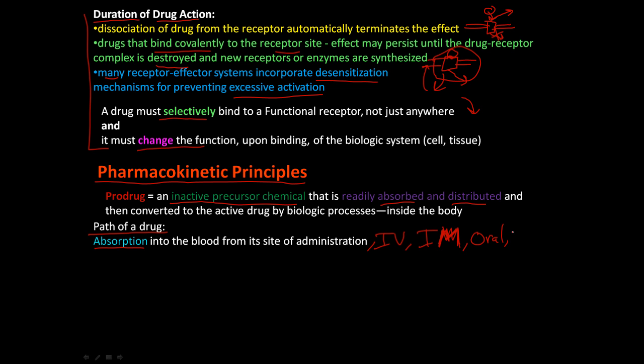It could be oral, it could be through the rectum, it could be just under the skin. There's several sites of administration that drugs can happen. So first of all, the path of the drug involves number one, absorption.